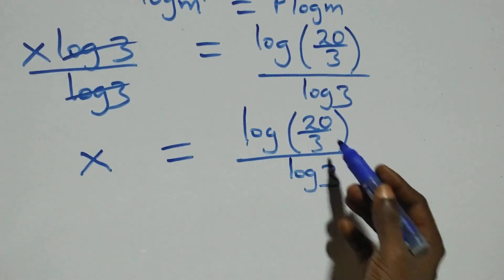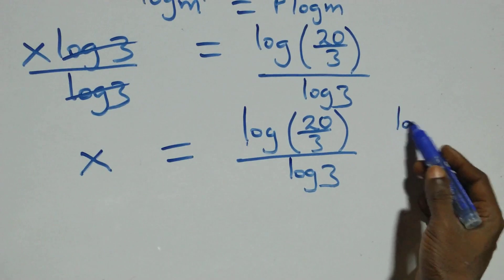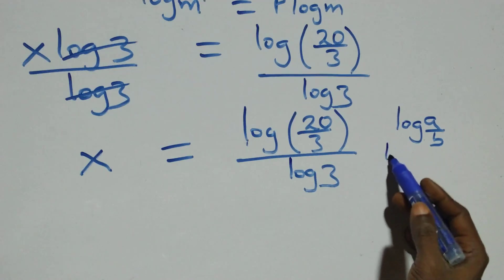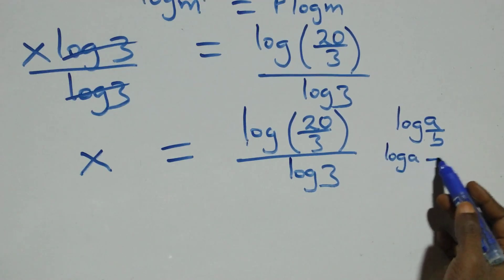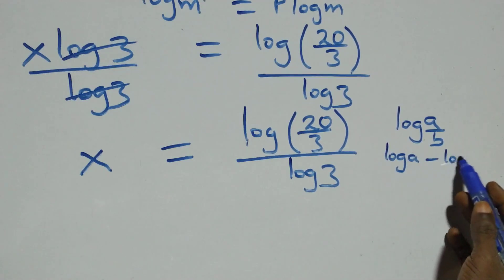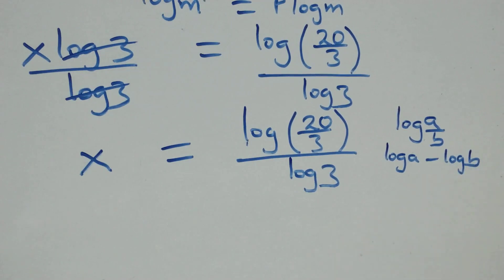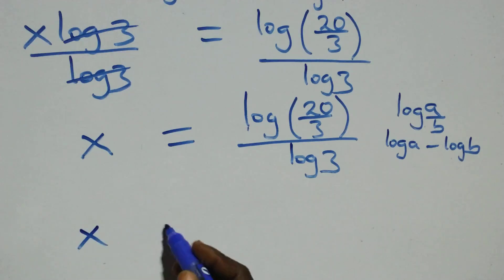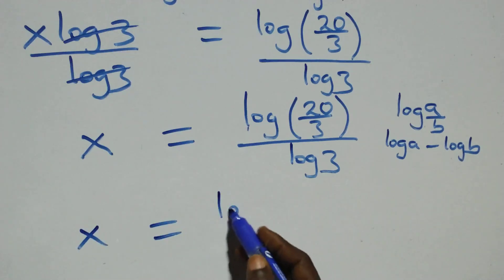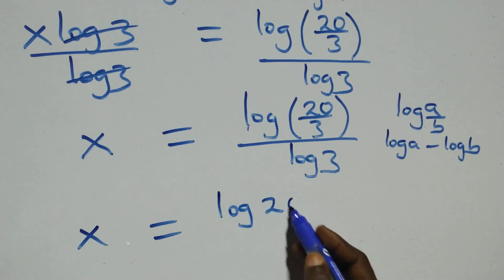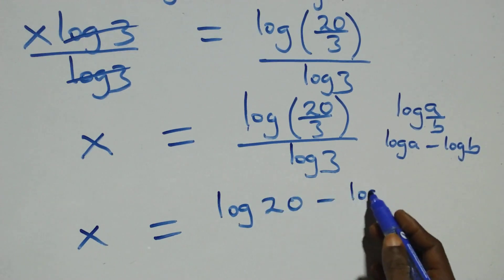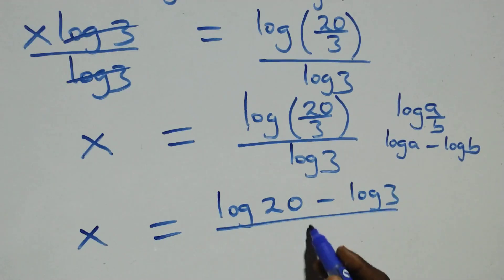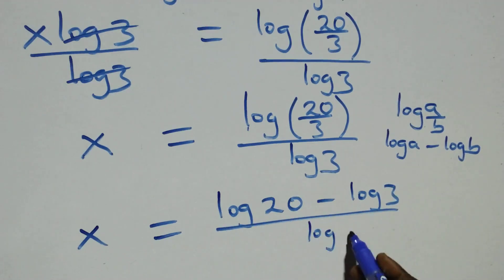This follows a log rule: when we have log a over b, this is the same thing as log a minus log b. So what we have becomes x equals log 20 minus log 3, all over log 3.